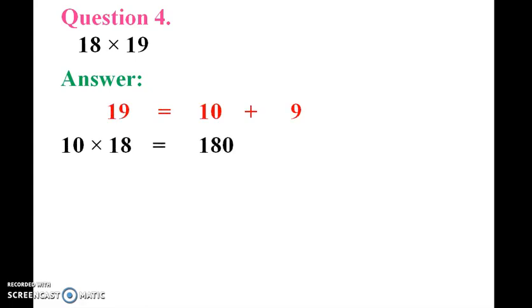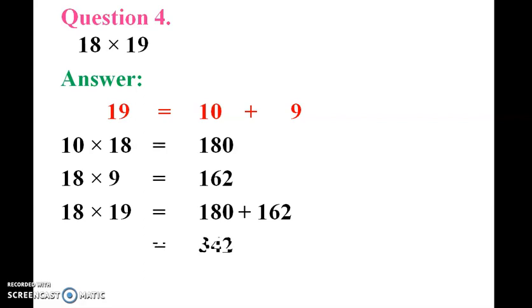Question 4: 18 into 19. The highest number is 10 plus 9. So 10 into 18 is 180. 18 into 9 is 162. The sum is 342.